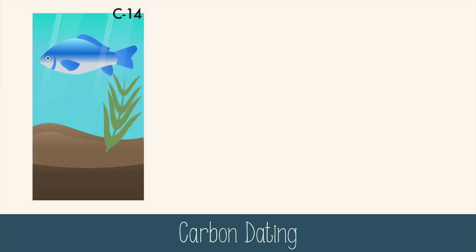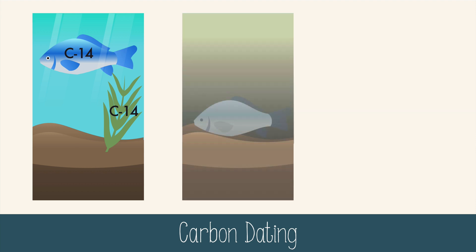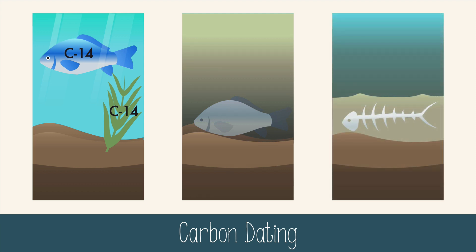Small amounts of carbon-14 naturally exist. Plants incorporate that carbon as they perform photosynthesis. Animals eat those plants and incorporate C-14 into their body tissues. Living things have a continuous supply of C-14 while alive, but when they die, the carbon-14 in their body won't be replenished and can only decay into nitrogen-14. Scientists can measure the amount of carbon-14 left in long-dead plants and animals to figure out how long ago that creature died.